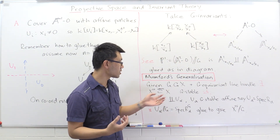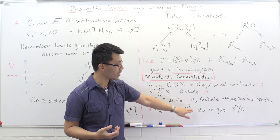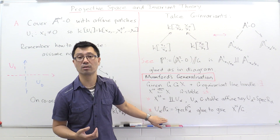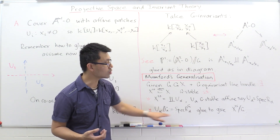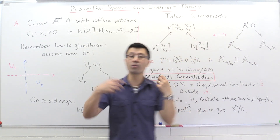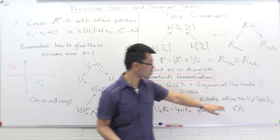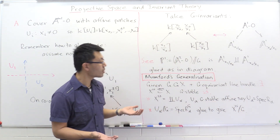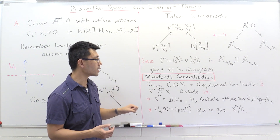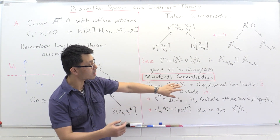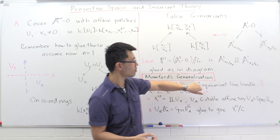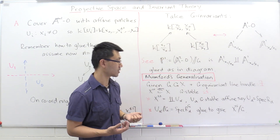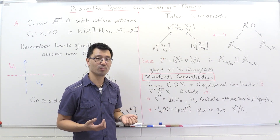Since these affine sets are G-stable, you take their invariants to get the quotients of these affine patches by G. Then you construct all the gluing data to glue everything together to get the quotient X^{ss} // G. This is extremely interesting with many applications in mathematics. Notably, it depends on the choice of the G-equivariant line bundle, and this choice leads to extremely interesting mathematics. I hope you enjoyed this adventure in pure mathematics.